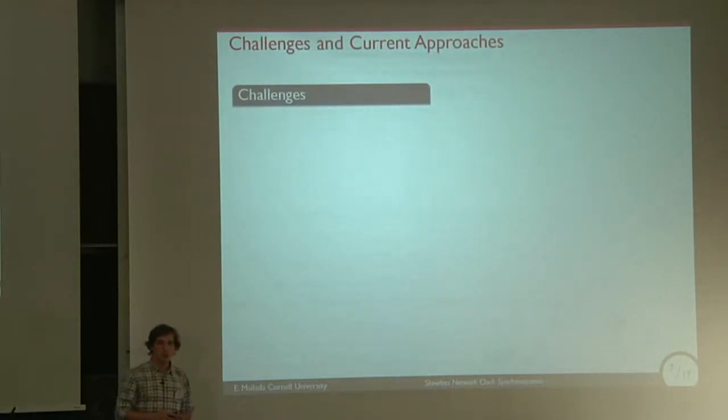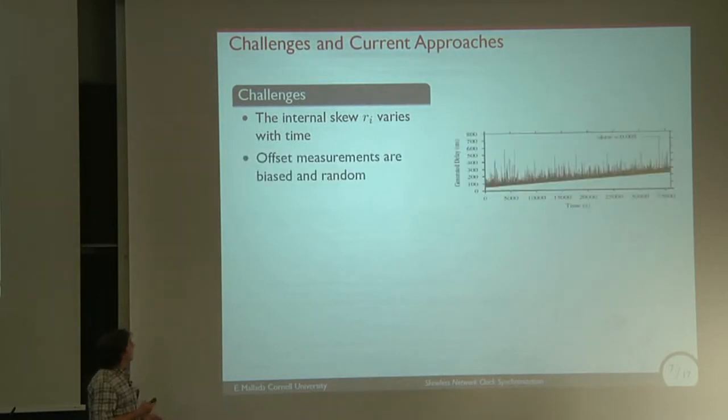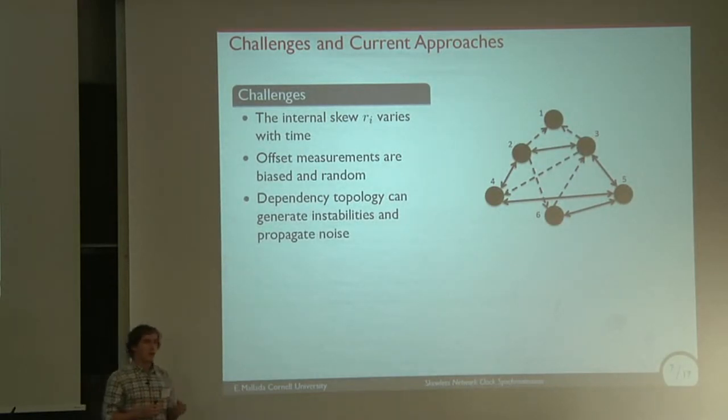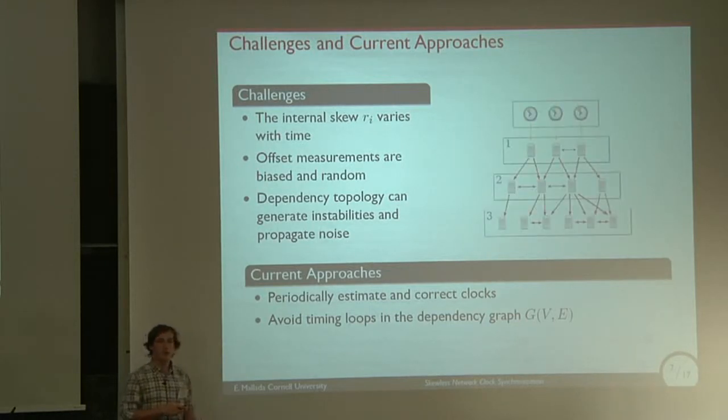However, there are several challenges in this problem. First, this frequency error actually changes with time, which is usually called wander. It varies over long time and depends on the temperature and several other factors. Also, the offset measurements that you can do through the network are very noisy. Finally, the dependency graph, who gets information from who in this network, can introduce instabilities and propagating errors. The way current protocols are solving this is by periodically making corrections on the clocks and trying to keep the dependency graph fairly simple to avoid loops.